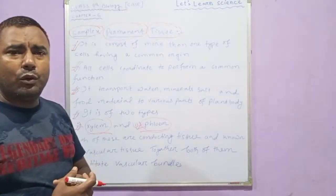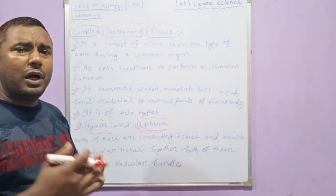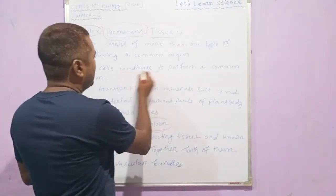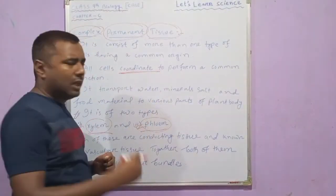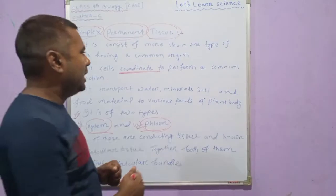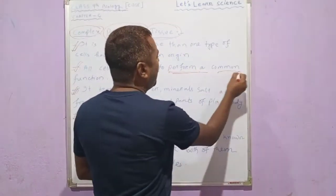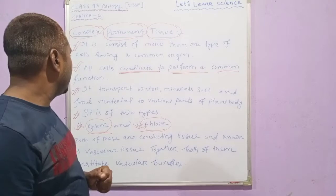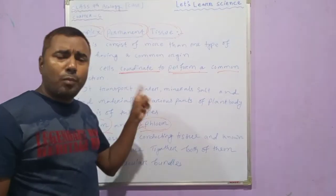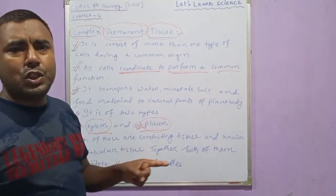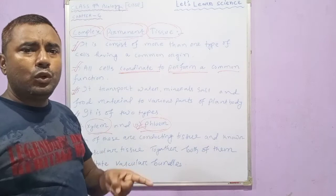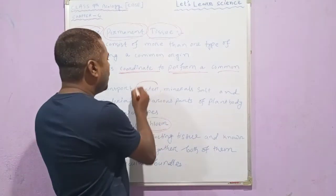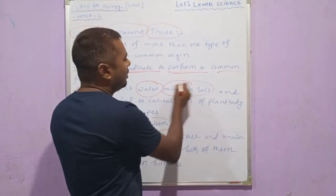Complex permanent tissue is made up of different cells with a common origin, and they are organized to perform a common function in the plant body. Each and every cell helps each other. The complex permanent tissue is mainly responsible to transport water, mineral salts, and food material.